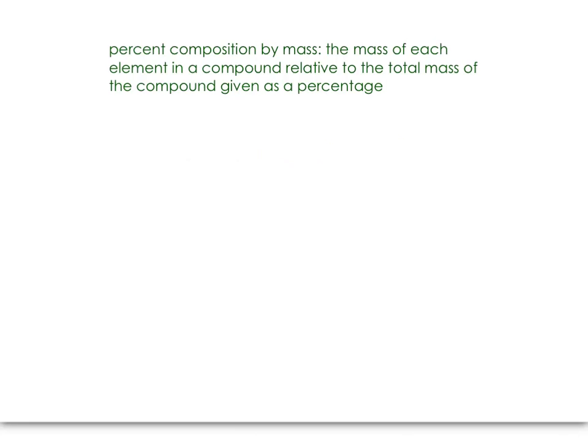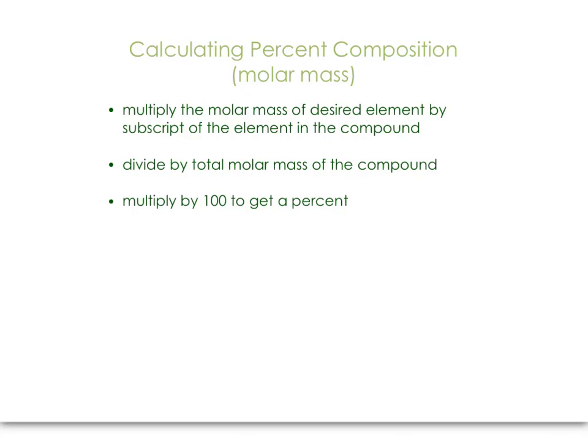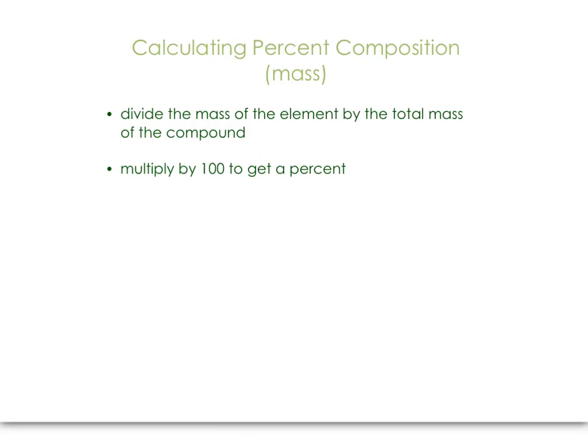If you understand how to calculate a percent, you'll understand how to calculate percent composition by mass. This is where we look at the mass of each element relative to the total mass of the compound and then report that out as a percentage. There are two different masses that we can look at: the molar mass of the element relative to the molar mass of the compound, or just plain masses, the mass of one element relative to the total mass of the compound.